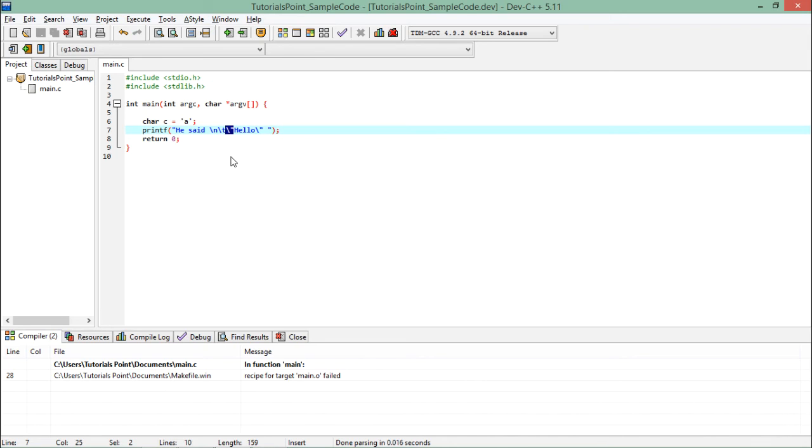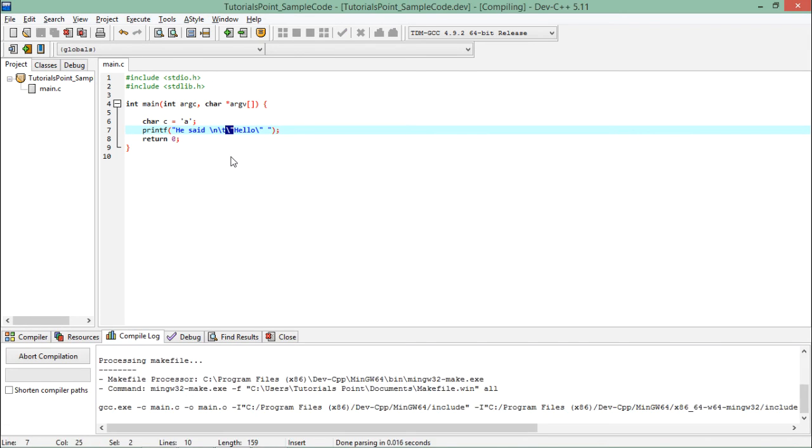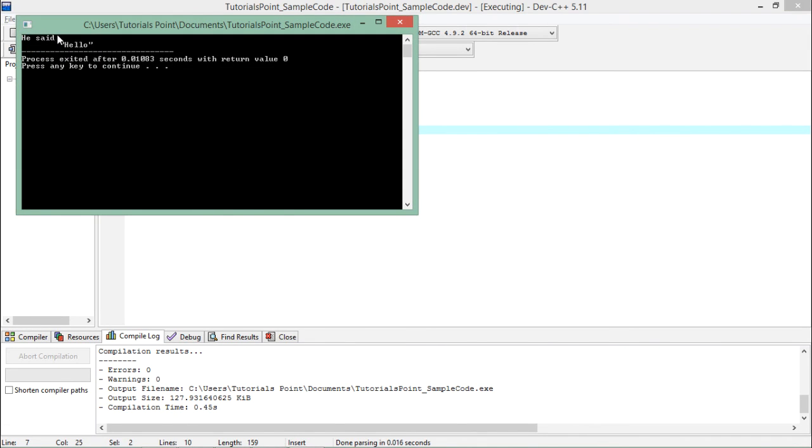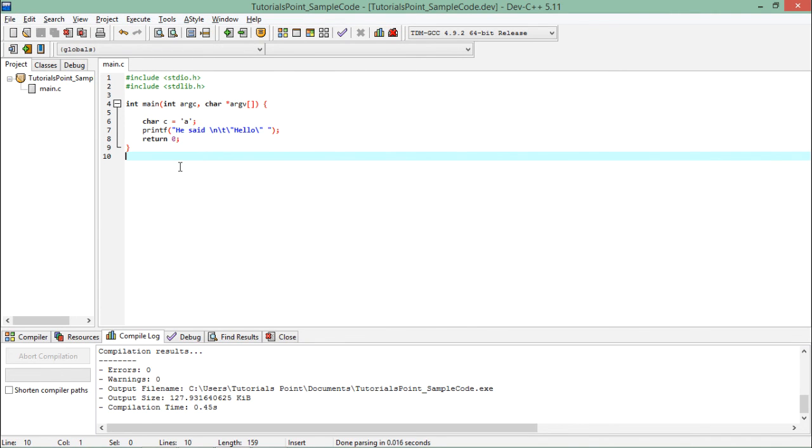printing the double quotes inside printf. So as soon as I execute this, you can see first it breaks the line, then there is a tab space, and then the double quotes get printed. So this is how you can start dealing with character constants while working with the character data type.